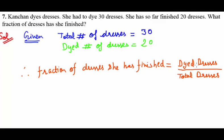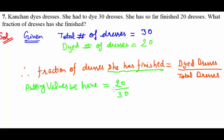We are asked to find the fraction of dresses she has finished, so the finished dresses come into the numerator. Putting in values: 20 over 30 — 20 from dyed dresses and 30 from total dresses. Reducing to simplest form, the zeros cancel, so we get 2 over 3 as your final answer.